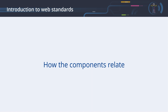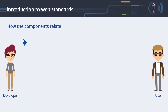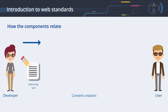How the Components Relate. It is important to ensure that all the components of the web development process and of the user interaction process work together. A developer or author creates web content using an authoring tool. In its most basic form, this can be a text editor for writing HTML and CSS code, or they may use a complex content management system for managing the information resources of websites with thousands of web pages. If the content to be created is media-related, then audio or video editors may be used. It is important that the applied tools allow the author to create content following the web content accessibility guidelines.